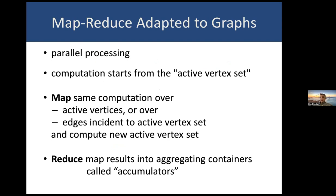How are these queried? The underlying computation model is an adaptation of the map-reduce paradigm to graphs in order to facilitate parallel processing. This computation has as a central concept that of the active vertex set. There is a correspondent of the map concept in which one applies the same function — the same computation — over all the vertices in the active set, or over all the edges incident upon this active vertex set. In this map computation, one can also specify what the new active vertex set should be. The analog to the reduce part of the paradigm constitutes taking the results generated by the map computations and aggregating them into containers we call accumulators.